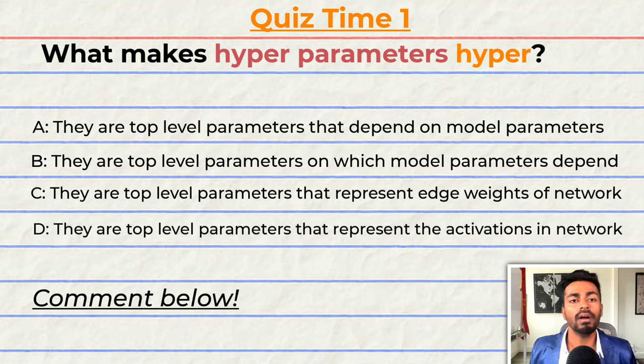Quiz time! Have you been paying attention? Let's quiz you to find out. What makes these hyperparameters hyper? A, they are top level parameters that depend on the model parameters. B, they are the top level parameters on which the model parameters depend. C, they are top level parameters that represent the edge weights of the network. And D, they are the top level parameters that represent the activations in the network.